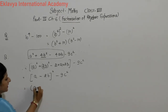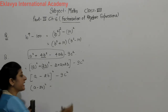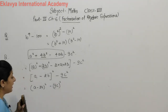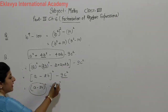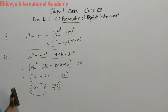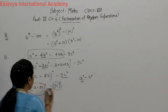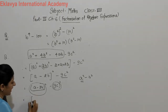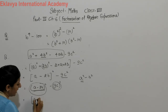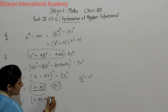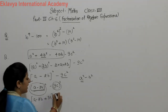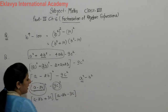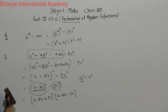Now (a - 2b)² - 9c². We can write 9c² as (3c)². Treating (a - 2b) as A and 3c as B, this becomes A² - B², which follows the identity (A+B)(A-B). So the factors are (a - 2b + 3c)(a - 2b - 3c). This is the complete factorization of the given algebraic expression.